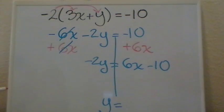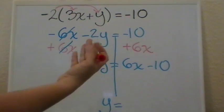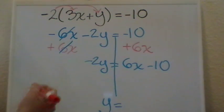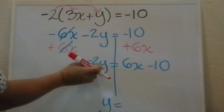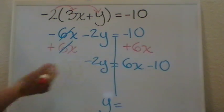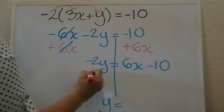Now the only number that I need to cancel is the negative 2, that is the coefficient of my y. For me to cancel this, I need to do the opposite. This being the coefficient, I know that this is a multiplication, so the inverse will be divide.